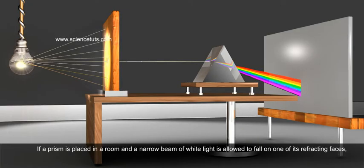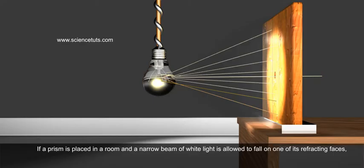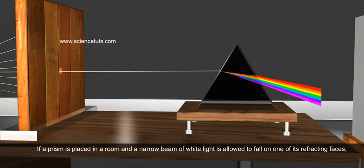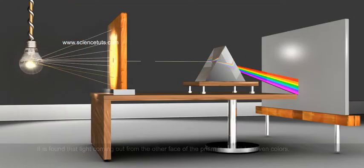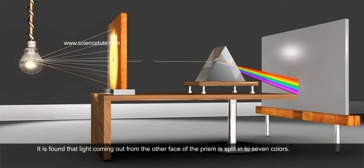If a prism is placed in a room and a narrow beam of white light is allowed to fall on one of its refracting faces, what do you observe? It is found that light coming out from the other face of the prism is split into seven colours.